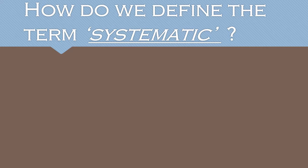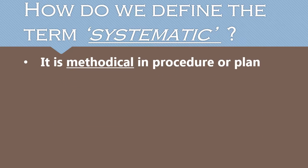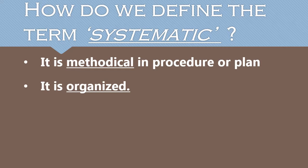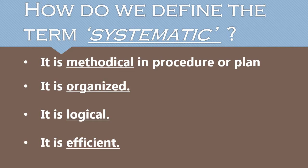How do we define the term systematic? One, it is methodical in procedure or plan, meaning there are a series of steps that need to be followed in order to execute it. Two, it is organized because it is related to or consisting of a system, meaning the system must be executed in an orderly manner. Three, it is logical because it is presented or formulated as a coherent body of ideas or principles — referring to systematic thought. Lastly, it is efficient, referring to systematic efforts, where this is effective in class that is marked by thoroughness and regularity.